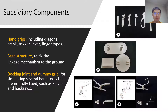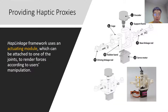We also designed some subsidiary components that can be combined with the linkage structure. The hand grips, which are directly held by users, including diagonal, crank, trigger, lever, and fingertips. The base structure fixes the linkage mechanism to the ground — some hand tools are used on the floor or desk and grasped by one hand, like paper trimmer and coffee grinder. The docking joint and dummy grip are used for simulating several hand tools that are not fully fixed, such as knives and hacksaws. To provide haptic proxies, we designed a simple activating module to limit, drive, and restore the movement of the linkage structure according to user manipulation.